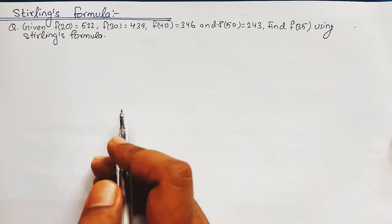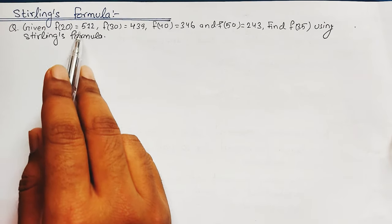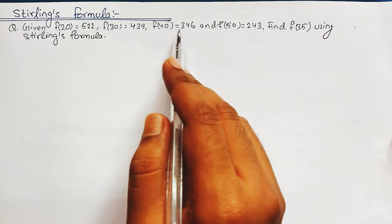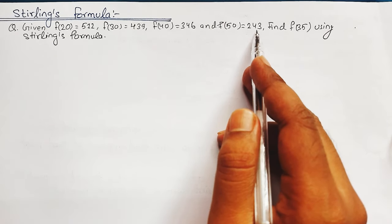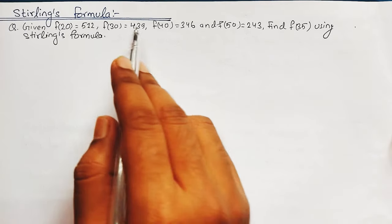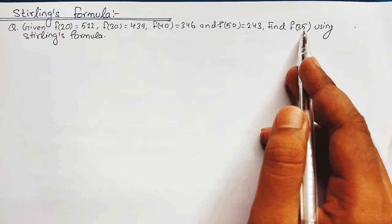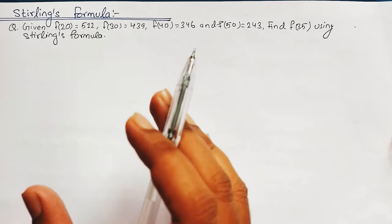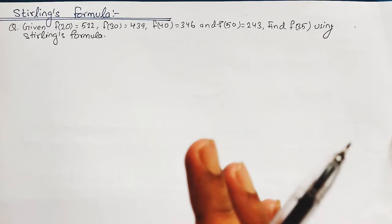Let's begin the solution. We are provided with F(20) equals 512, F(30) equals 439, F(40) equals 346, F(50) equals 243, and we are asked to calculate the value of F(35). F(35) lies between F(30) and F(40), meaning the value is going to lie between 439 and 346, and we are going to use Stirling's formula to calculate it.